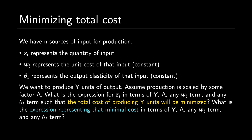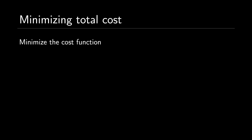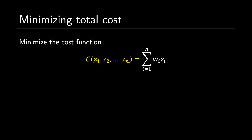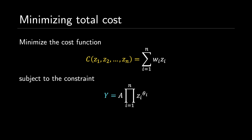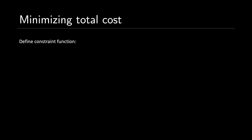What is the expression representing the minimal cost in terms of y, A, any w sub i term, and any theta sub i term? Using these two points, the question transforms into a standard Lagrange multiplier problem: minimize c equals the sum from i equals 1 to n of w sub i times z sub i, subject to the constraint y equals A times the product from i equals 1 to n of z sub i to the power of theta sub i. We begin by redefining our constraint as a function: f equals A times the product from i equals 1 to n of z sub i to the power of theta sub i, minus y.